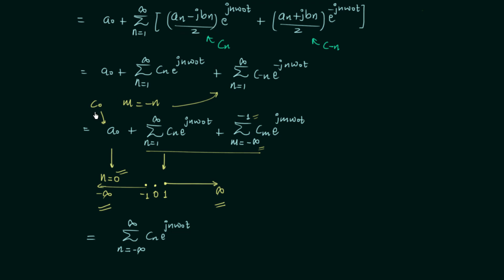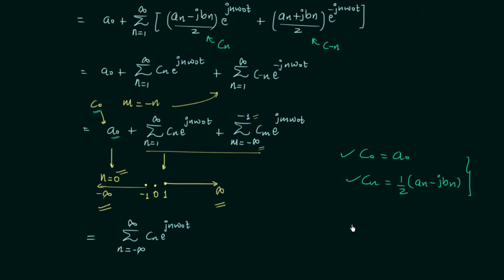From this equivalence, c_n = (a_n - j·b_n) / 2 and c_0 = a0. We can now summarize: c_0 = a0, and c_n = (1/2)·(a_n - j·b_n). So whenever a0, a_n, and b_n are given, we can easily obtain c_0 and c_n. Now we will focus on obtaining a0, a_n, and b_n when c_0 and c_n are given; the first relation remains the same: a0 = c_0.